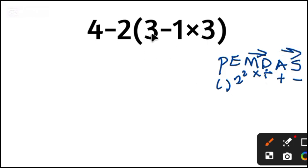Begin with parentheses. 3 minus 1 times 3. They are in parentheses. So multiplication first. Minus 1 times 3 will give us what? Minus 3.